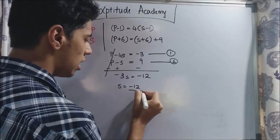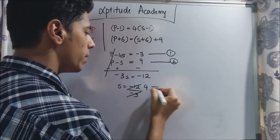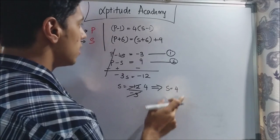Or S is equal to minus 12 upon minus 3. Minus 3 fours are 12. So we know Shruti's age is 4.